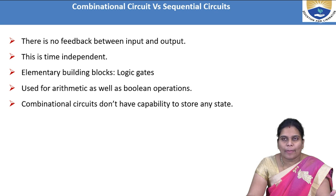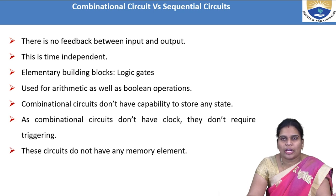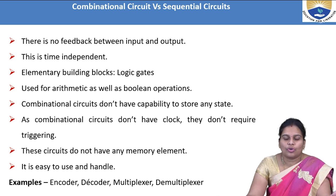Combinational circuits do not have the capability to store any state, since they do not depend on previous inputs — no value needs to be stored. That is why no clock is used and no triggering pulses are required. These circuits do not have any memory element and are easy to use and handle. Examples include encoder, decoder, multiplexer, and demultiplexer.